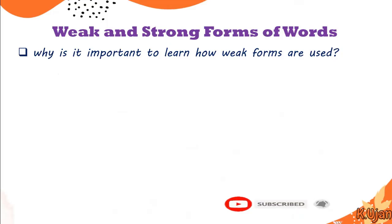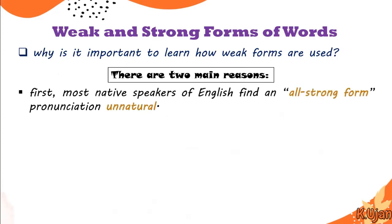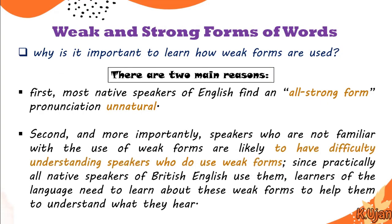Why is it important to learn how weak forms are used? There are two main reasons. First, most native speakers of English find an all-strong-form pronunciation unnatural. Native speakers consider strong forms unnatural and believe weak forms are to be used in connected speech. Second, and more importantly, speakers who are not familiar with weak forms are likely to have difficulty understanding speakers who do use weak forms.